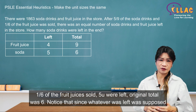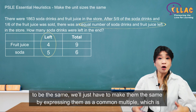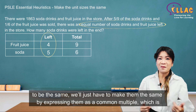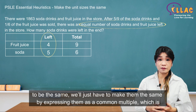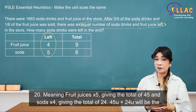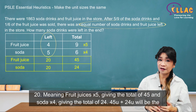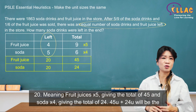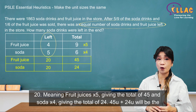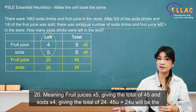Notice that since whatever was left was supposed to be the same, we'll just have to make them the same by expressing them as a common multiple, which is 20. That means fruit juices times 5, giving a total of 45, and soda times 4, giving a total of 24.